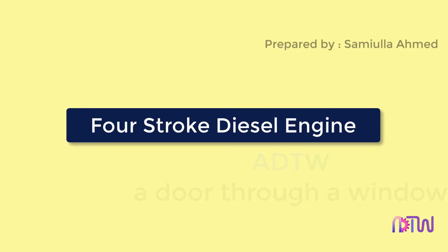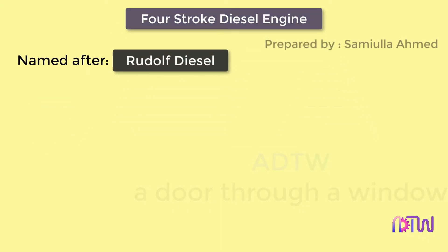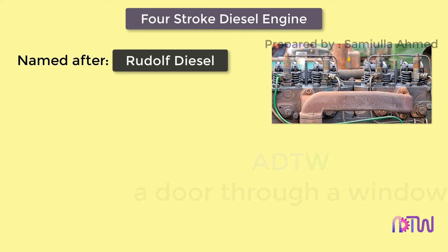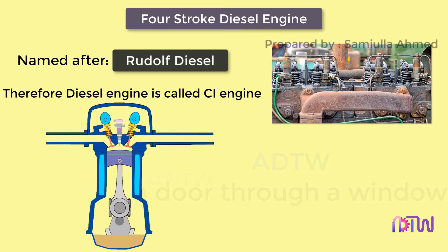The diesel engine, named after Rudolf Diesel, is an internal combustion engine in which ignition of the fuel is caused by the elevated temperature of the air in the cylinder due to mechanical compression. Thus the diesel engine is a so-called compression ignition engine, or CI engine. In this engine, the piston completes four separate strokes while turning the crankshaft. A stroke refers to the full travel of the piston along the cylinder in either direction.